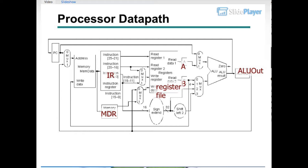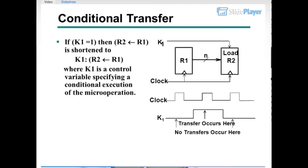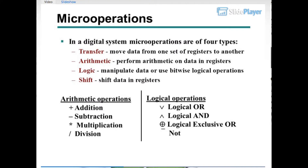Conditional transfer: if K1 equals 1, then R2 ← R1, shortened to K1: R2 ← R1, where K1 is a control variable specifying conditional execution of the micro operation. Micro operations in a digital system are of four types.